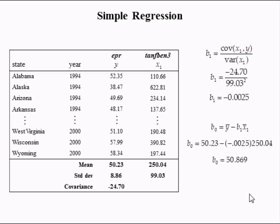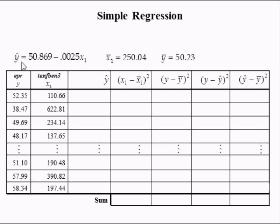The intercept is equal to 50.869%. We can think of the intercept as the value of Y when X is 0. When X is 0, the state's 10th benefit would be $0, and we expect the employment population ratio of that state to be equal to nearly 51%.